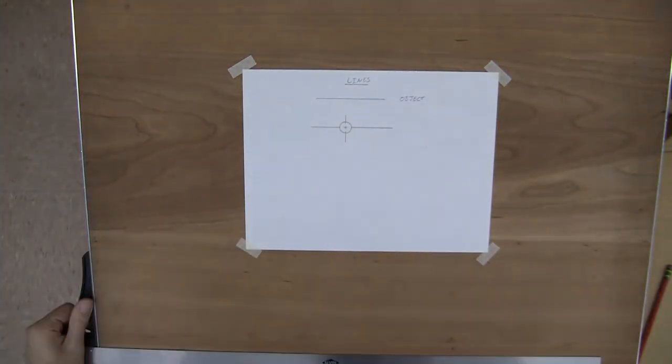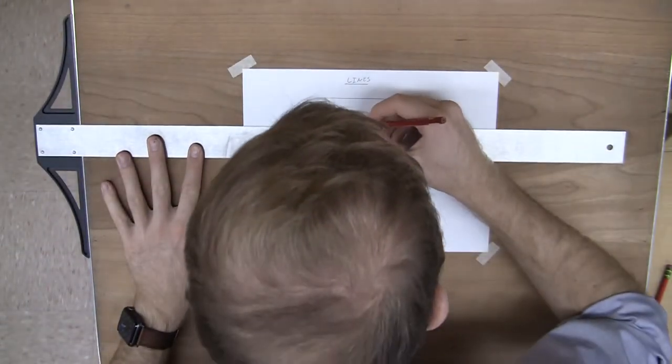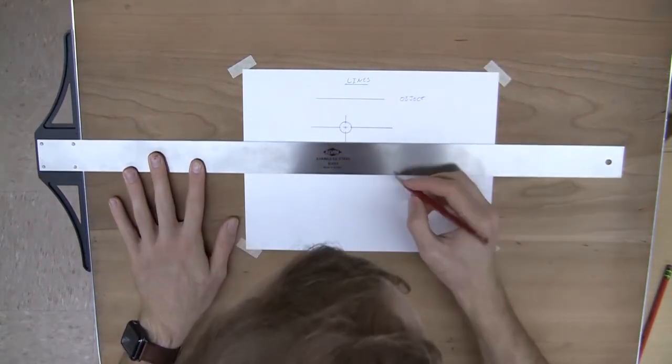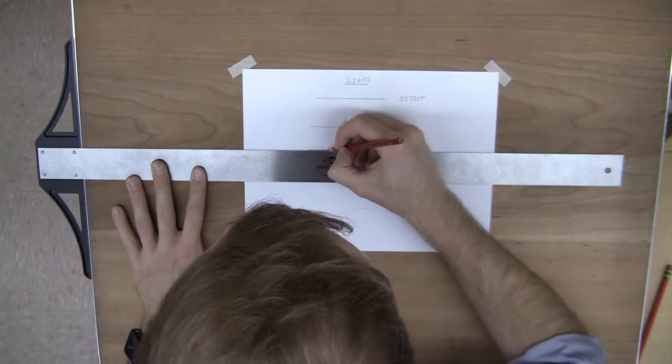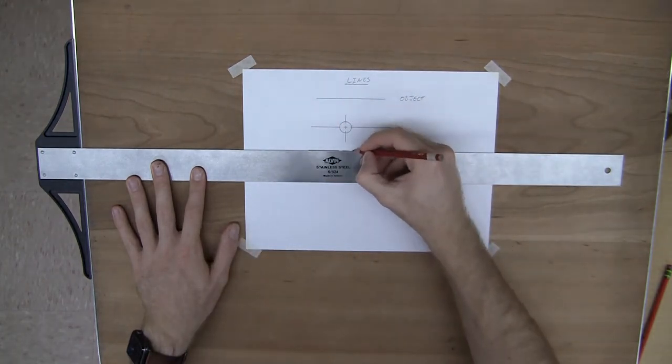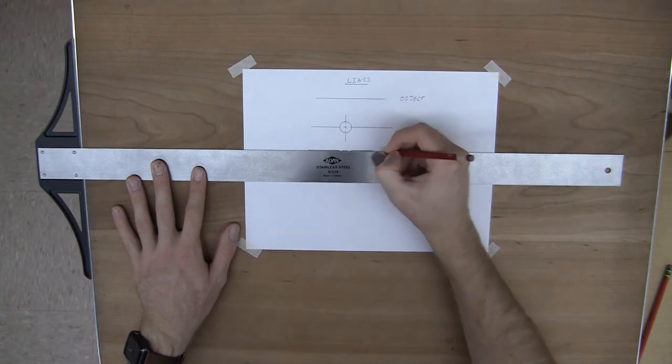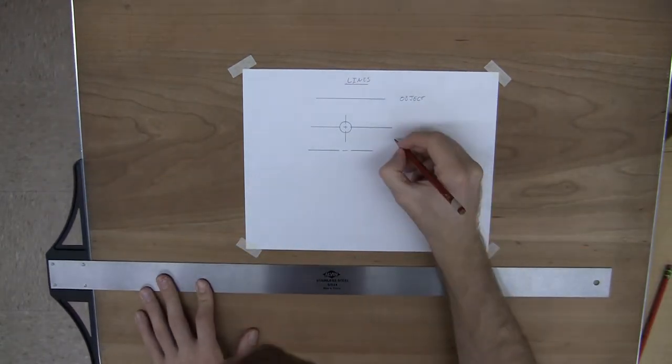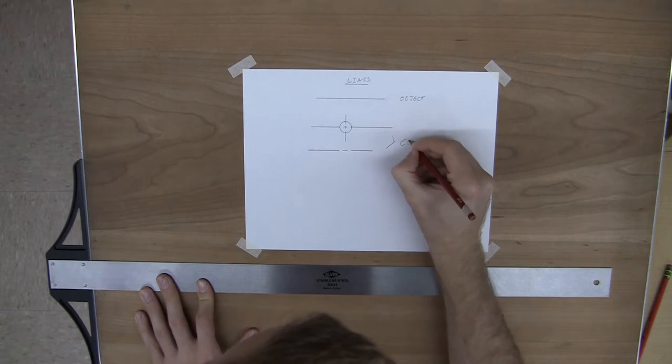We use center lines to show the center of something. And you'll see, I'm going to draw another one underneath it, that it's a long line, a small break with a small line, a small break, and then back to a normal long line. So both of these are center lines.